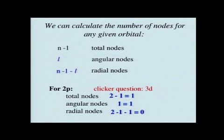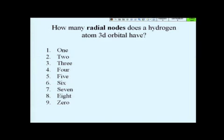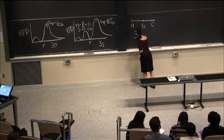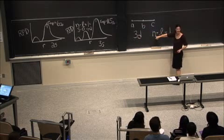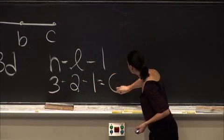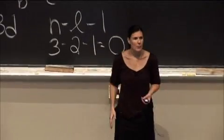Let's try one more — a 3d orbital. How many radial nodes does a hydrogen atom 3d orbital have? We use n minus l minus 1: n equals 3, l equals 2, so 3 minus 2 minus 1 = 0. It turns out that we have zero radial nodes when we're talking about a 3d orbital.